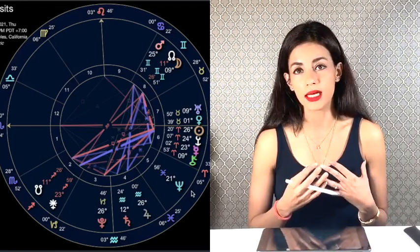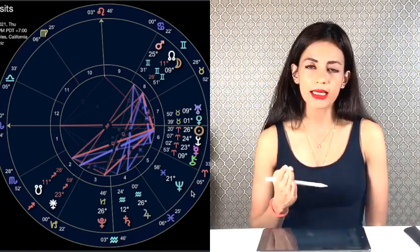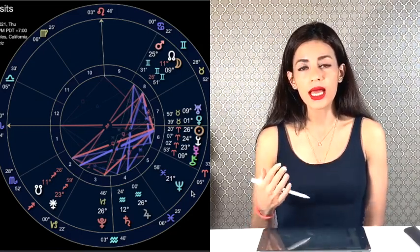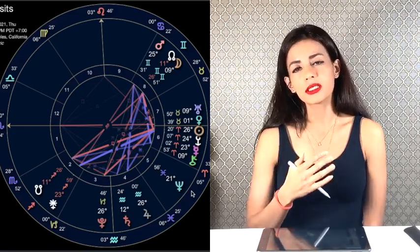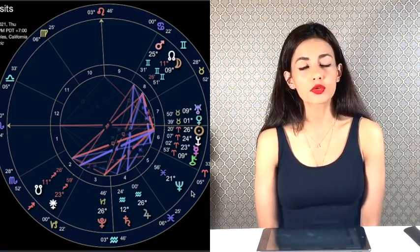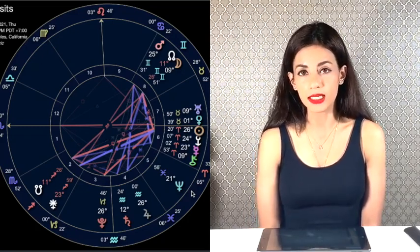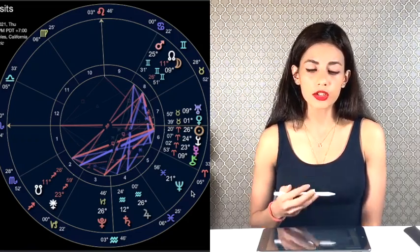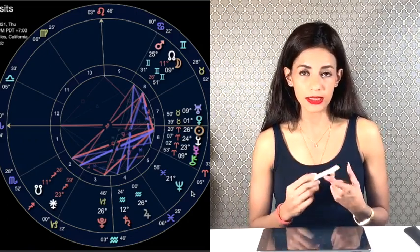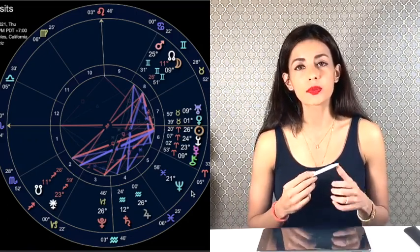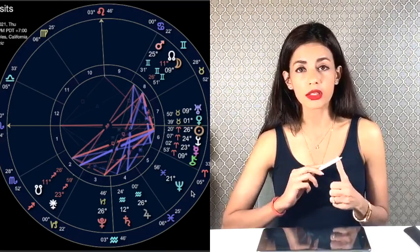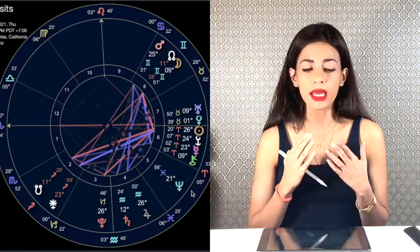Yesterday, Venus changed signs from Aries to Taurus. This was a big deal. Why? Because Venus really does not like to be in the sign of Aries. Aries is a masculine sign ruled by Mars, and Venus is a feminine energy. It likes to be in Taurus.